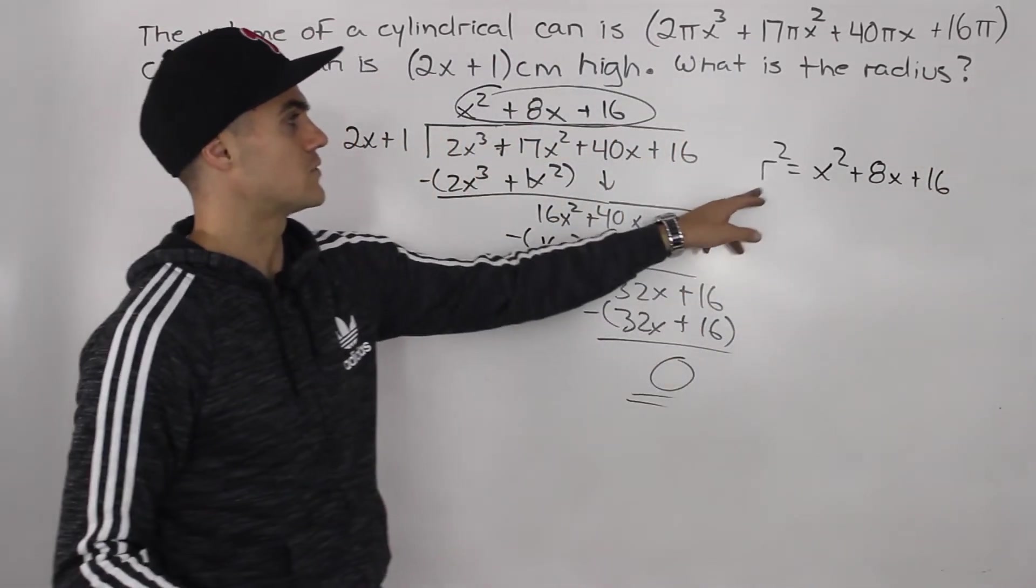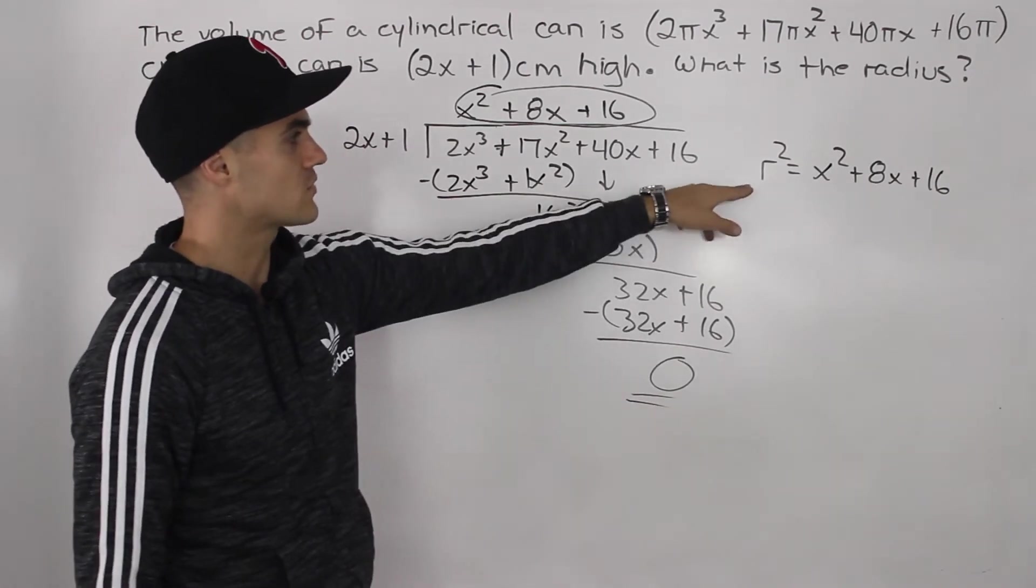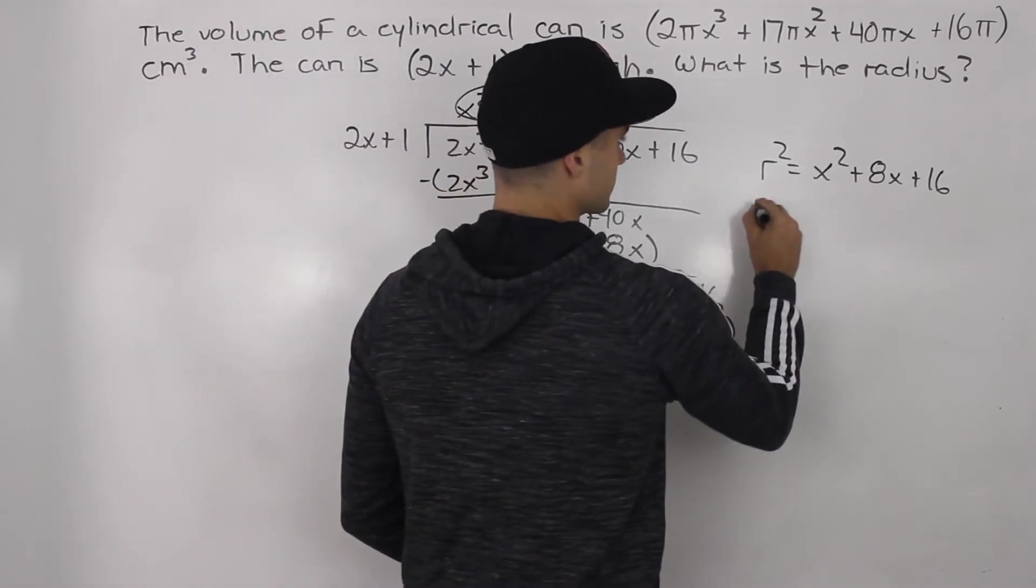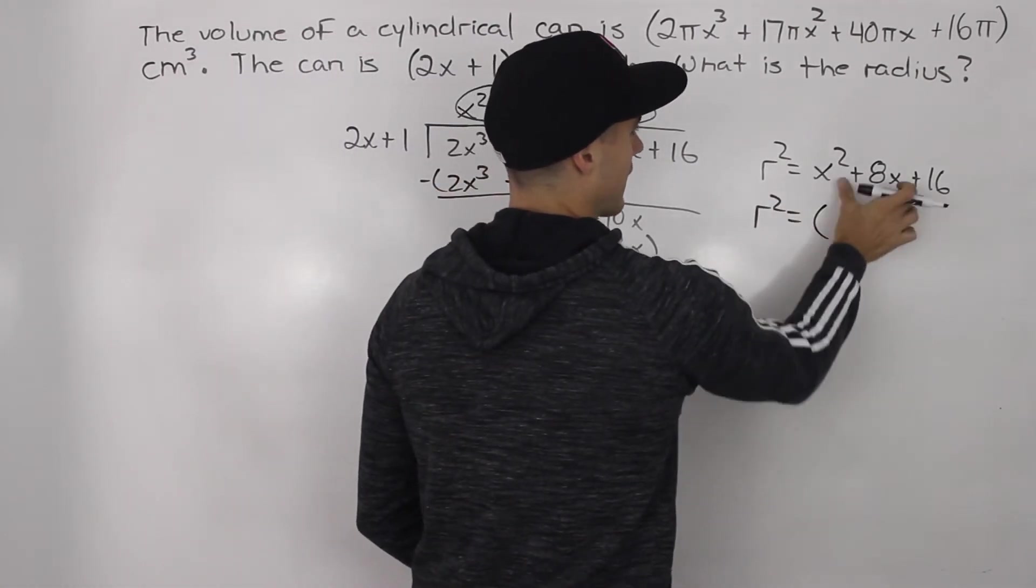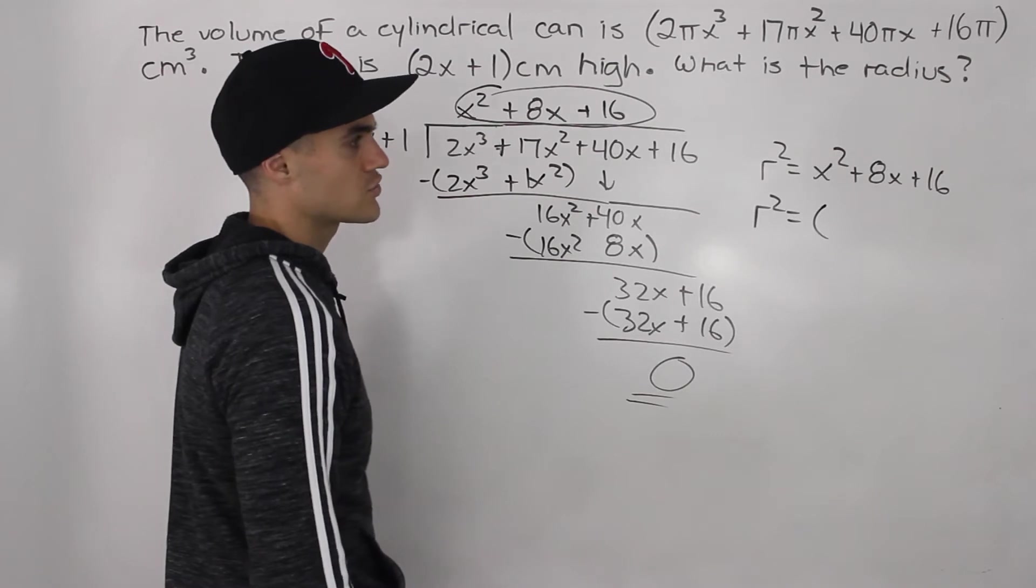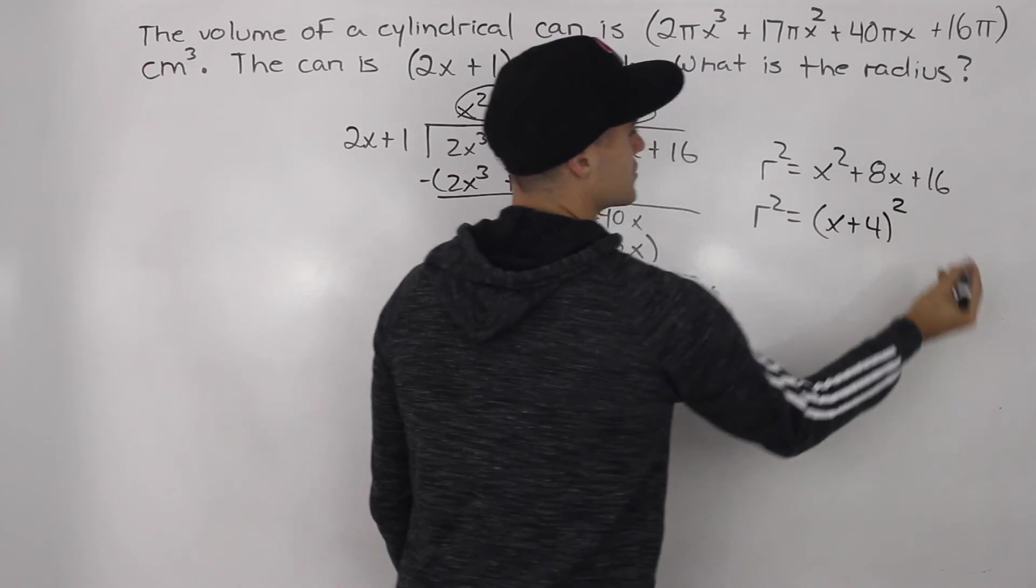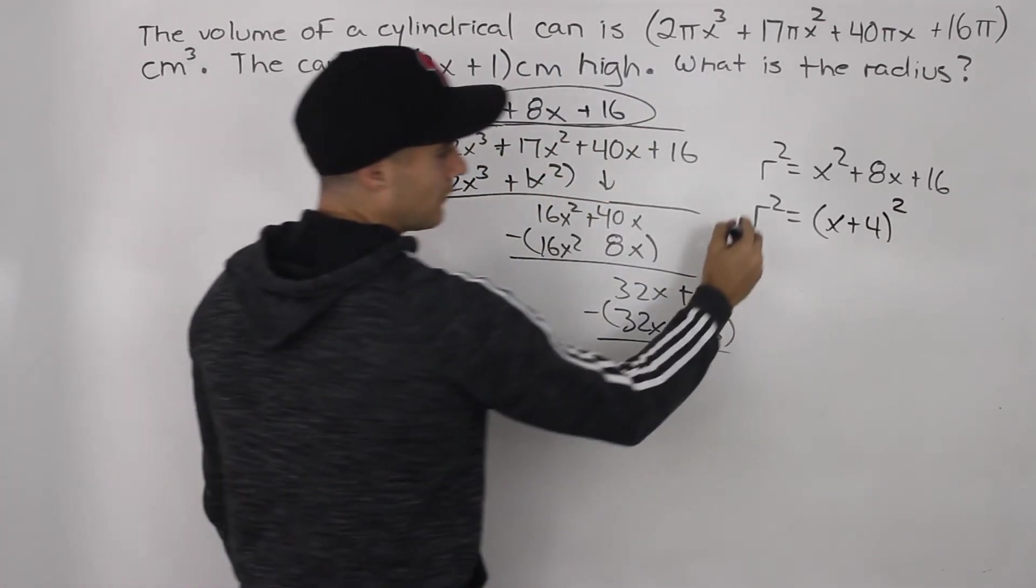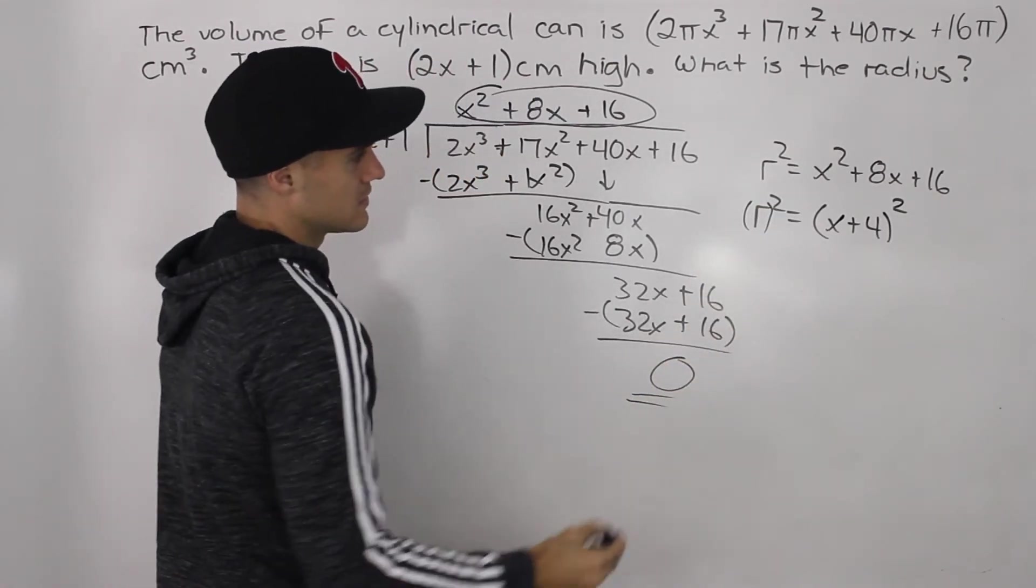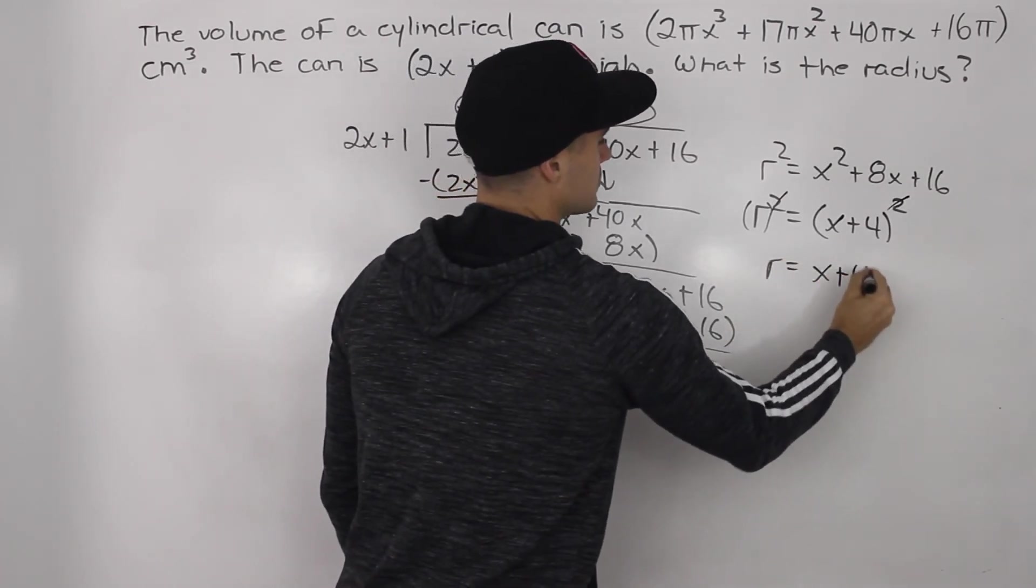However, we don't want r². We just want the radius, r by itself. Usually when we have r², we're square rooting both sides. However, in this case, what I would do is just factor that right side. When we factor that right side, notice how that's a perfect square trinomial. That would factor into (x + 4)². So now we have r² = (x + 4)². Notice how these twos can cancel out. Basically, r then equals x + 4.